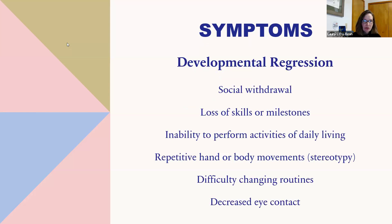Developmental regression can include social withdrawal — wanting to stay in your room all the time, not wanting to come out at all — or loss of skills or milestones that a person has previously accomplished. People who used to be able to take their shower, get dressed, brush their teeth, and get ready in the morning can no longer do their daily living skills anymore, or need a lot of help where they didn't before.